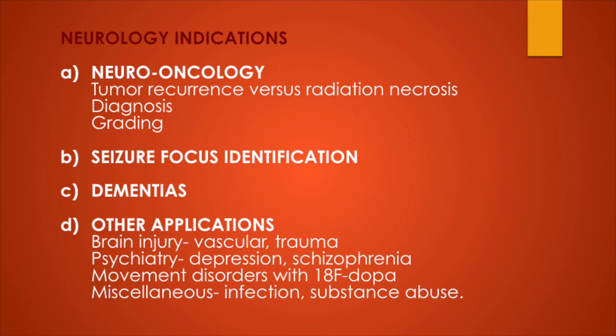Second is for diagnosis, then grading, then seizure focal identification, which is one of the important entities. Dementia is an important aspect I will be covering today. How PET is useful in identifying and quantifying the different applications on PET and their presentations in dementia. Other applications include brain injury, vascular trauma, psychiatric applications like depression, schizophrenia, movement disorders with 18F-DOPA, and miscellaneous conditions like substance abuse.